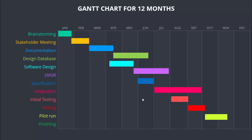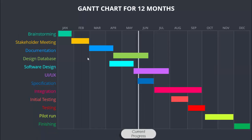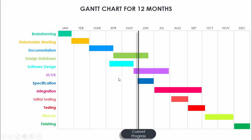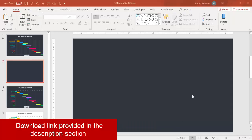When I click it will start giving all the timelines one by one, and then it will show the current progress — you can move this according to your requirement and add more if needed. I also made another slide with a white background, so let's see how to do this in PowerPoint.